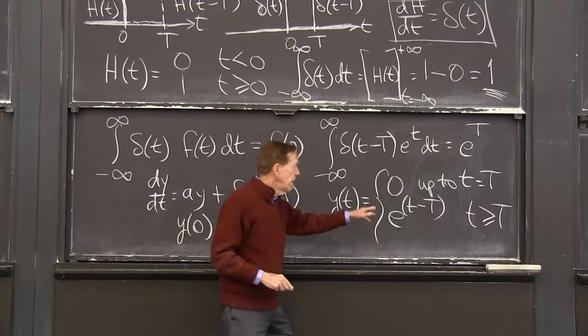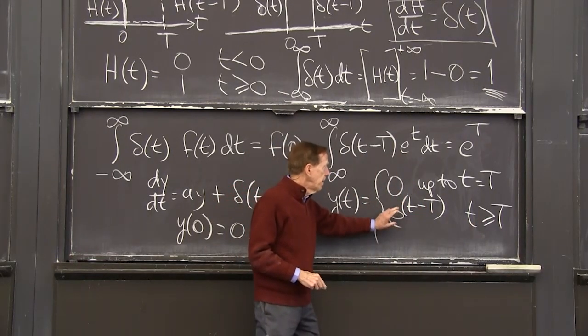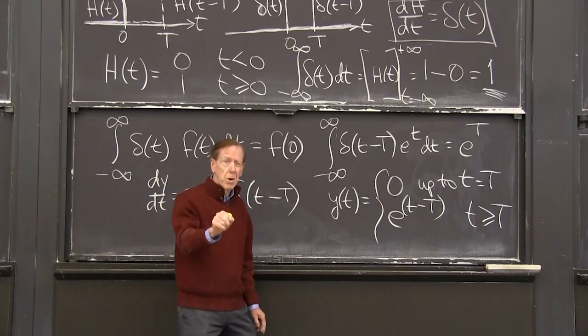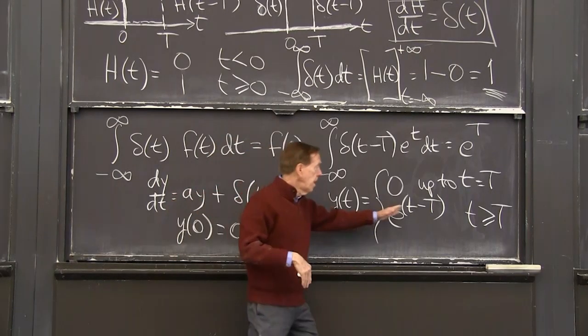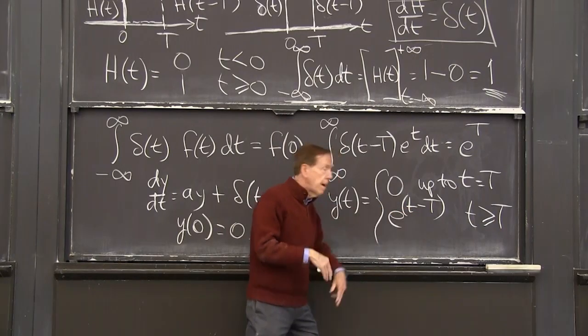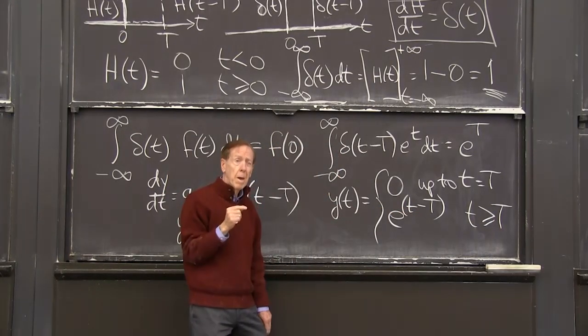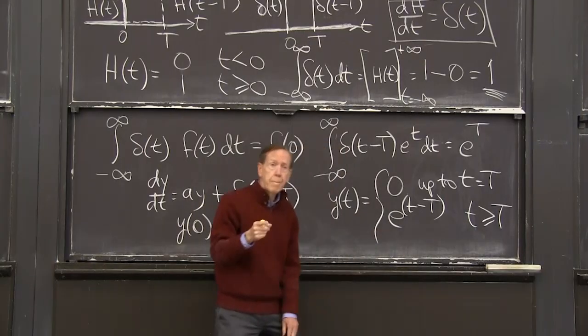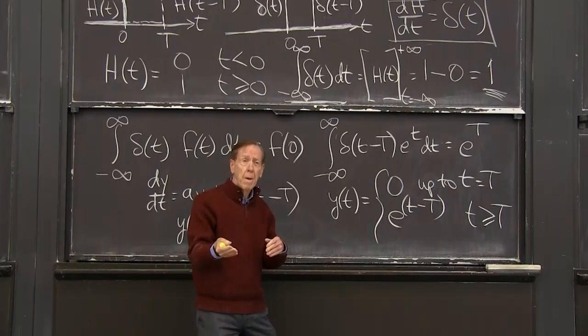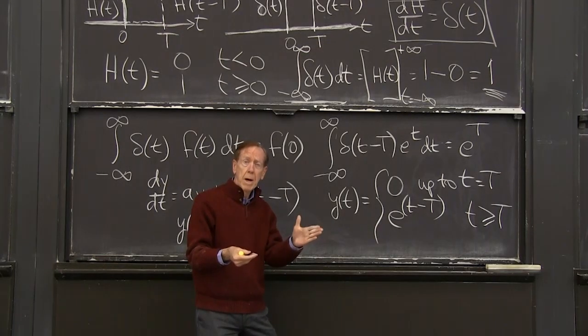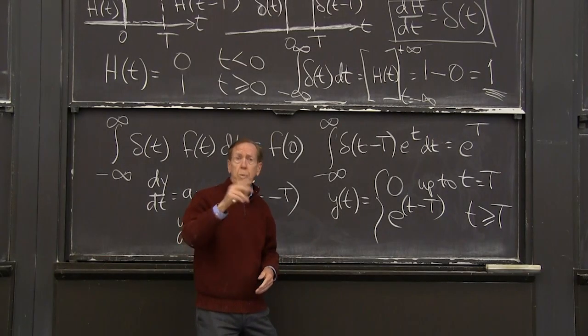Well, when t and capital T are equal, that's e to the 0. That's our dollar. Just gone in. When t minus capital T is a year later, our dollar is worth e. When t minus capital T, when it's been in there for a year, that $1 has increased to 2.